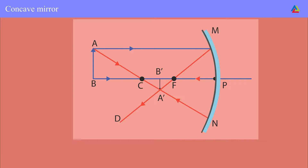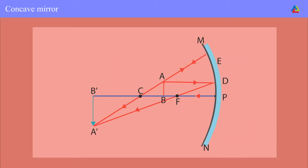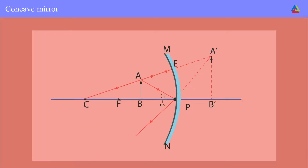When a ray passes through the center of curvature, after reflection it travels back along the same path. When the object is placed at C, the image forms at C and is the same size, real, and inverted. When a ray passes through the principal focus, after reflection it emerges parallel to the principal axis. When the object is between C and F, an enlarged, real, and inverted image forms beyond C. When the object is placed at F, a highly enlarged, real, and inverted image forms at infinity.